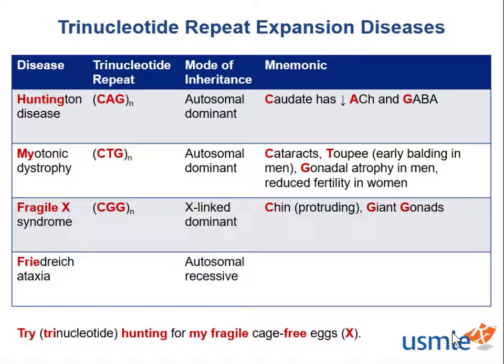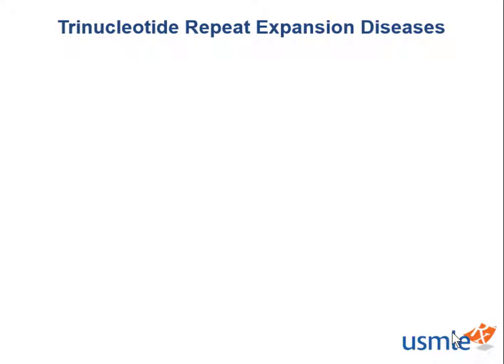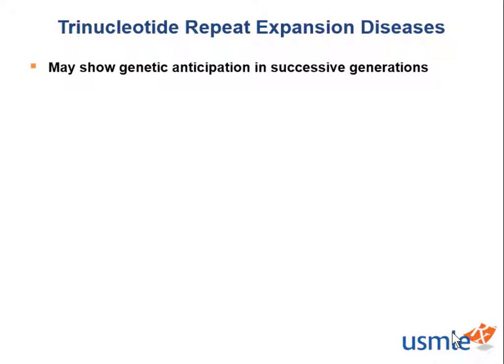Finally, for Friedreich's ataxia, the trinucleotide repeat is G-A-A. We can remember it by thinking of ataxia in the name of the disease and how it affects our G-A-A-T, G-A-A.